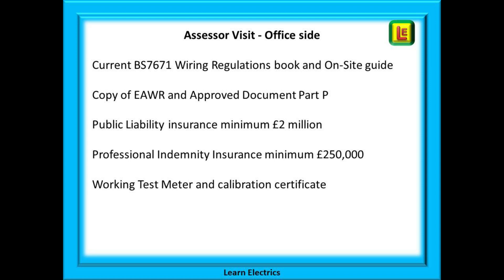The same applies to the On-Site Guide — you will need a copy and will be questioned on it. Physical copies or online versions of Approved Document P and the Memorandum of Guidance on the Electricity at Work Regulations must be in your possession and must be seen. If it is the online version, the assessor will ask you to open the file and identify what regulation is on specific pages. Don't try to fob your assessor off with a photograph of the front cover — people have tried, and they always find out.